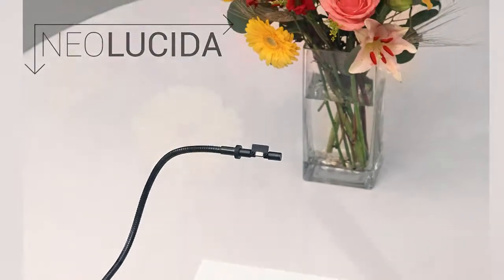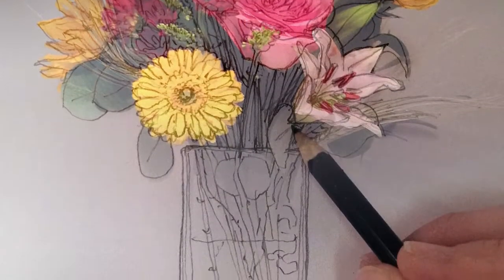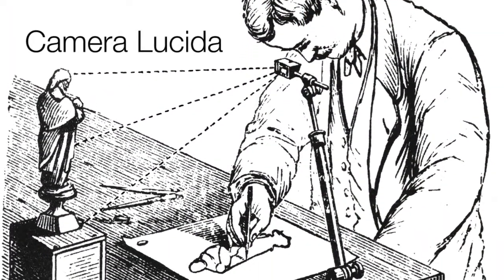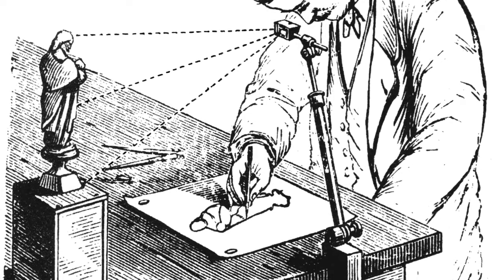The Neo Lucida is an optical drawing aid that lets you trace what you see. It's a modern reinterpretation of the Camera Lucida, an indispensable drawing tool popular in the days before photography.